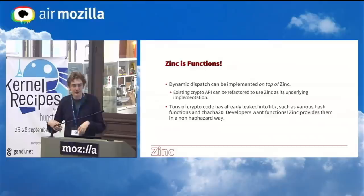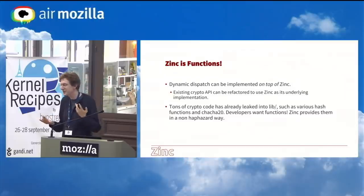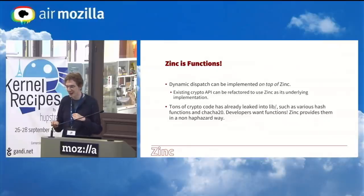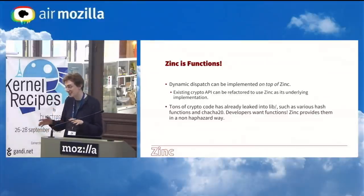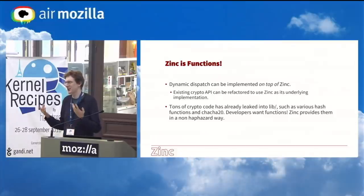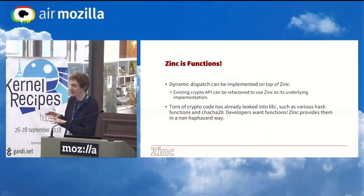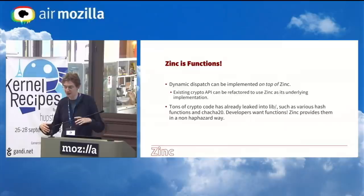Tons of crypto code has already been gradually snuck into the lib directory — SHA1 and SHA256 are in there, the SHA20 generic blocks function is in there — because developers realized they're not going to use the crypto API stuff either. Sometimes a maintainer would miss the fact that code was just being put in lib and used directly. This has happened a couple of times. There used to be half-MD4 in there, some crazy algorithm used in ext3 directory hashes. Zinc is going to consolidate these into one coherent, consistent place.